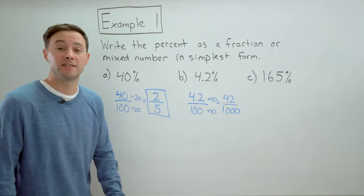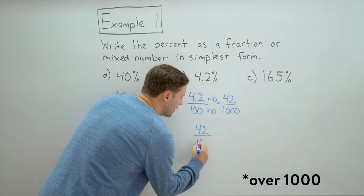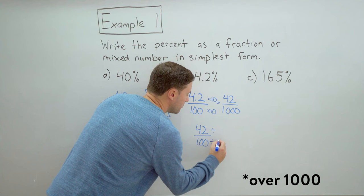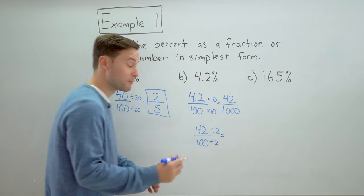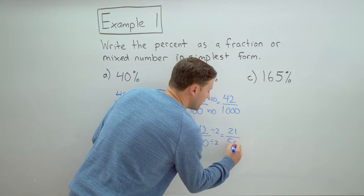So times ten times ten and I get forty two over one thousand. And now I just need to simplify that fraction. So forty two over one hundred, divide the numerator and denominator by two. They're both even numbers. And I get twenty one over five hundred.